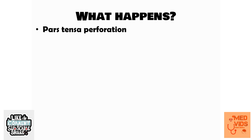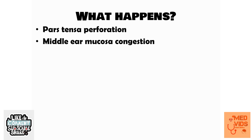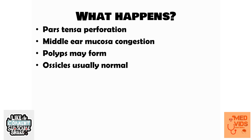In tubo-tympanic CSOM, there will be a central perforation in the pars tensa, visible through an otoscope. Through the perforation, we can observe the middle ear mucosa. If infection is not active, the mucosa appears pale. In active disease, the mucosa will be red, congested, and edematous, with profuse discharge. Sometimes polyps form — edematous mucosa that protrudes through the perforated tympanic membrane into the external auditory canal. The ossicles are usually normal.